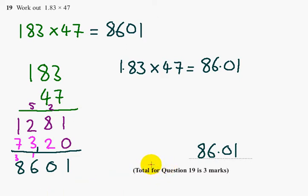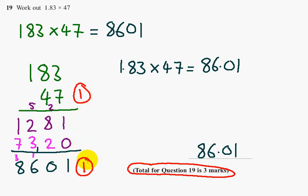Now, question 19 is worth 3 marks. You get 1 mark for a complete method to multiply 183 by 47, and you are allowed to make 1 multiplication error. The second mark for the digits 8,601. And the third mark for the final answer of 86.01. And that's it for question 19. Thank you.